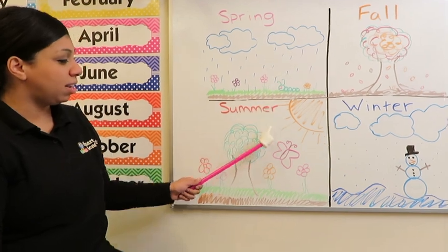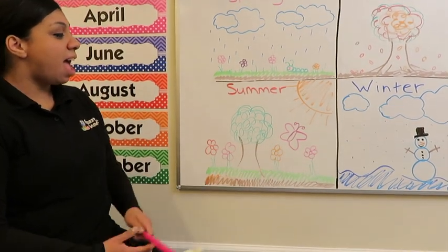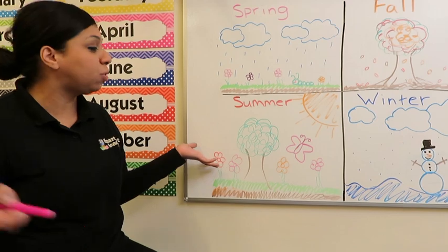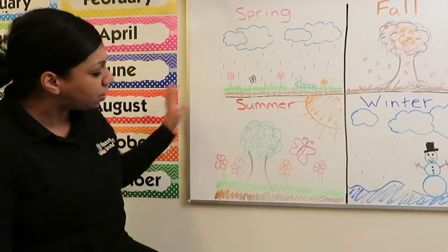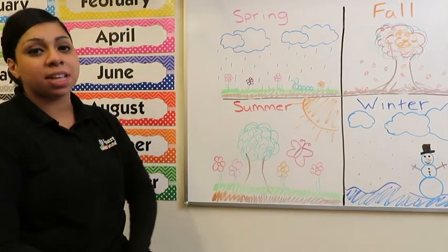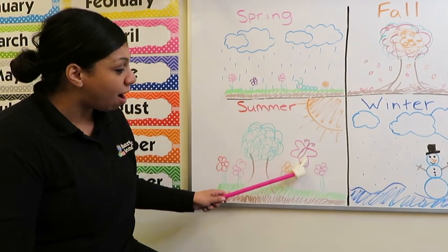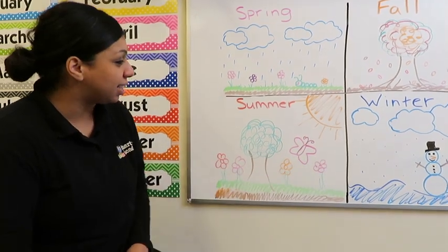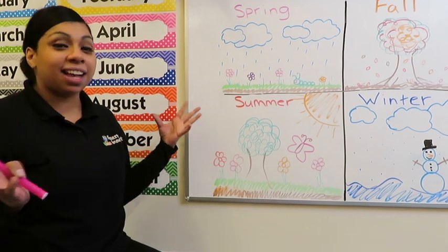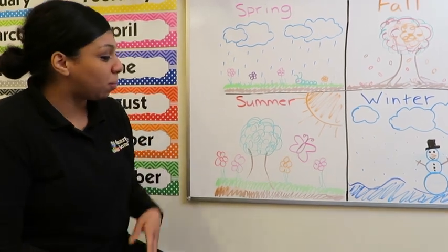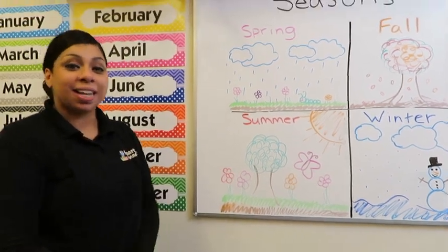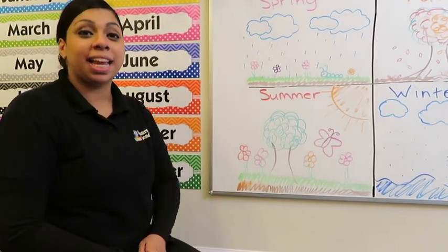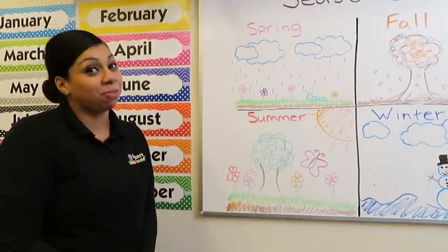So then we move on to summer. And in summer is when everything is full grown. The trees are full of leaves. All the flowers have bloomed. And look, our caterpillar is a butterfly. It's hot and it's sunny, and it's the time when we all like to go to the park and to the beach and have some fun and play games outside. Can't wait for summer.